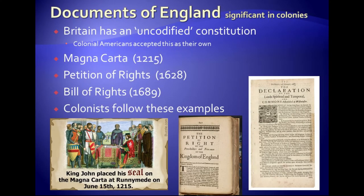Documents that were very important in colonial government across all the colonies — all of which developed a similar system with direct representation and colonial assemblies having the power of the purse — were those documents also essential to British government. And that begins with the Magna Carta.